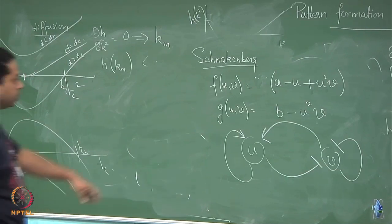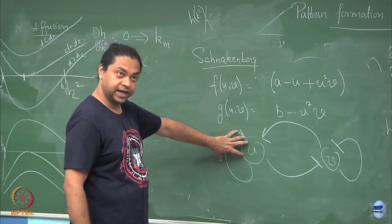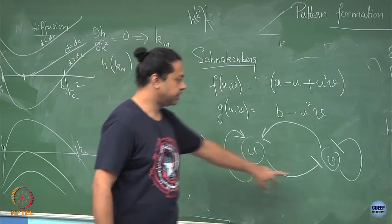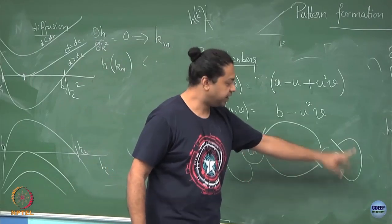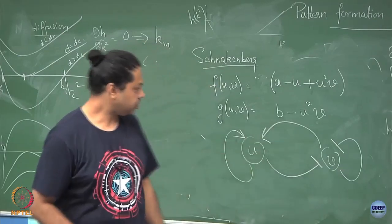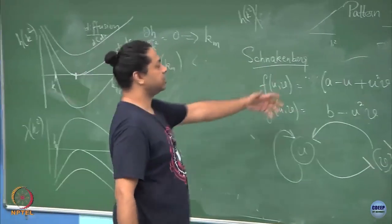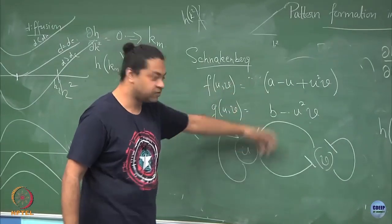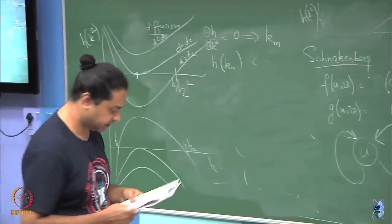This is what the Schnakenberg kinetics looks like at the network level: u up-regulates itself, it down-regulates v, v down-regulates itself, but it up-regulates u. You can look at these f and g terms and say what sort of a chemical reaction network you have basically underlying this.